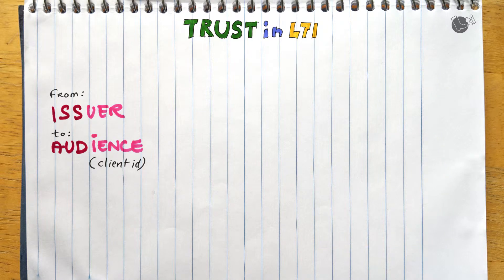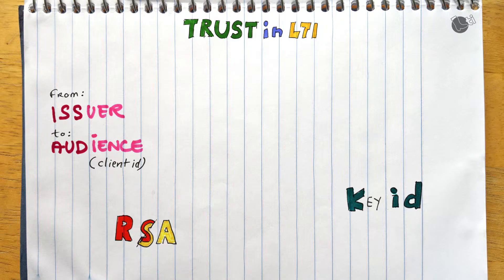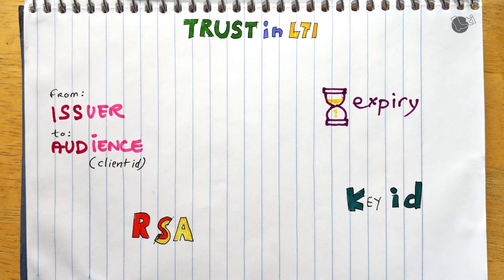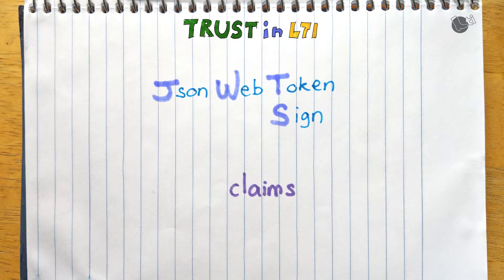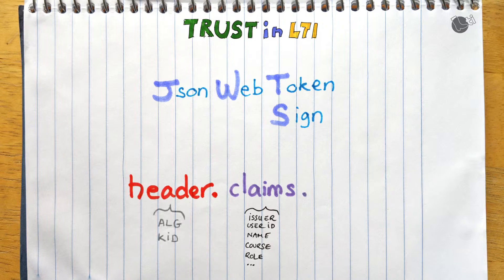The message itself must contain the issuer, the audience, the key ID, and which algorithm was used for the signature. It also contains an expiry time and a timestamp. All of this has already been defined through the JSON Web Tokens specification — more precisely JSON Web Signature — which encodes all this information into a JSON payload. The token is made of three parts: the payload (called a claim set), a header that tells you which algorithm was used, and the actual signature. All of it is base64 encoded.